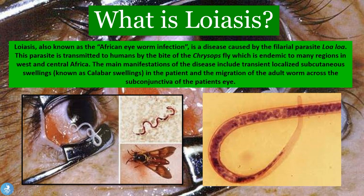The disease manifests with two main symptoms: the calabar swellings, which we will explore further in a minute, and a very alarming symptom — the presence of worms which have the ability to walk across the eyeball. This is a very stressful and anxious experience for the patient, and this is actually why they come into the hospital pretty freaked out.